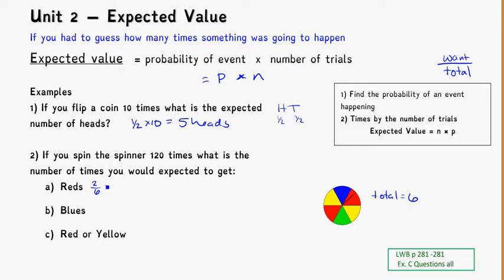So two out of six times 120 is going to be 40. So I'd expect to get 40 red as a result. The number of blues - well, that's one out of six. So I have a one out of six chance out of 120. So one out of six is my probability times 120 trials. That's going to get me 20 blue that I would expect to come up.